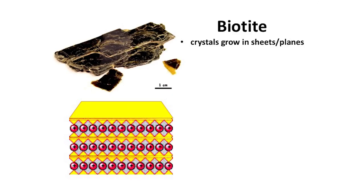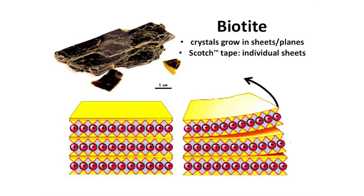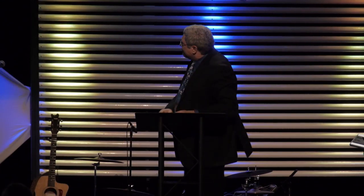Biotite crystals can grow up to very large sizes — up to three feet in diameter — but they're very flat, sheety minerals. They are so easily separated that you can take a piece of scotch tape, stick it onto the surface, rip it up quickly, and pull sheets that are sometimes only molecule-thick pieces of biotite up on the tape.